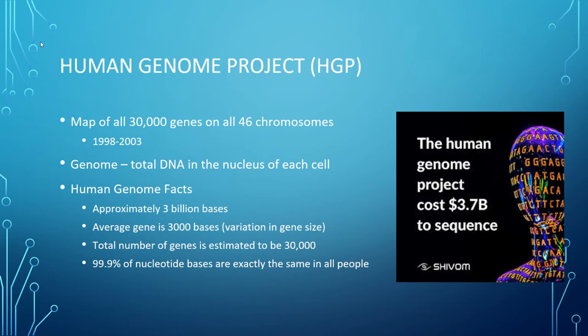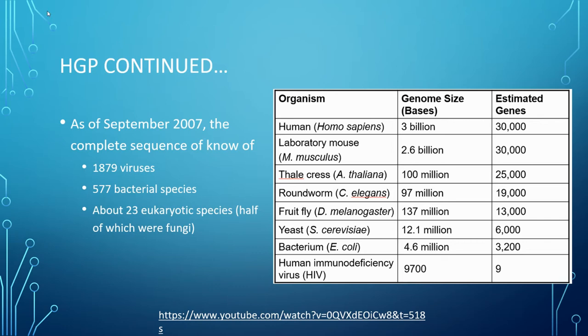We have mapped the genome of not just humans, but a bunch of different organisms as well. This is technology we've had for a while and that we just keep expanding. We can see which organisms we have — 1,800 viruses, bacteria, eukaryotic species — and the number just keeps growing as we keep mapping out and learning more about different organisms and their genomes.